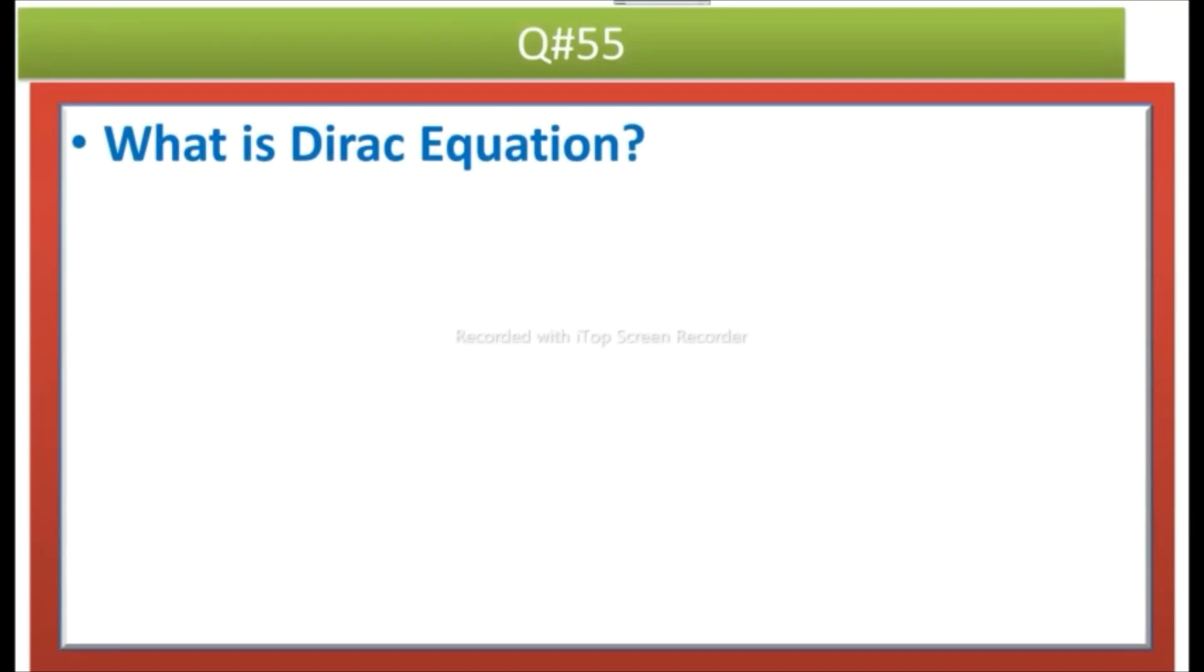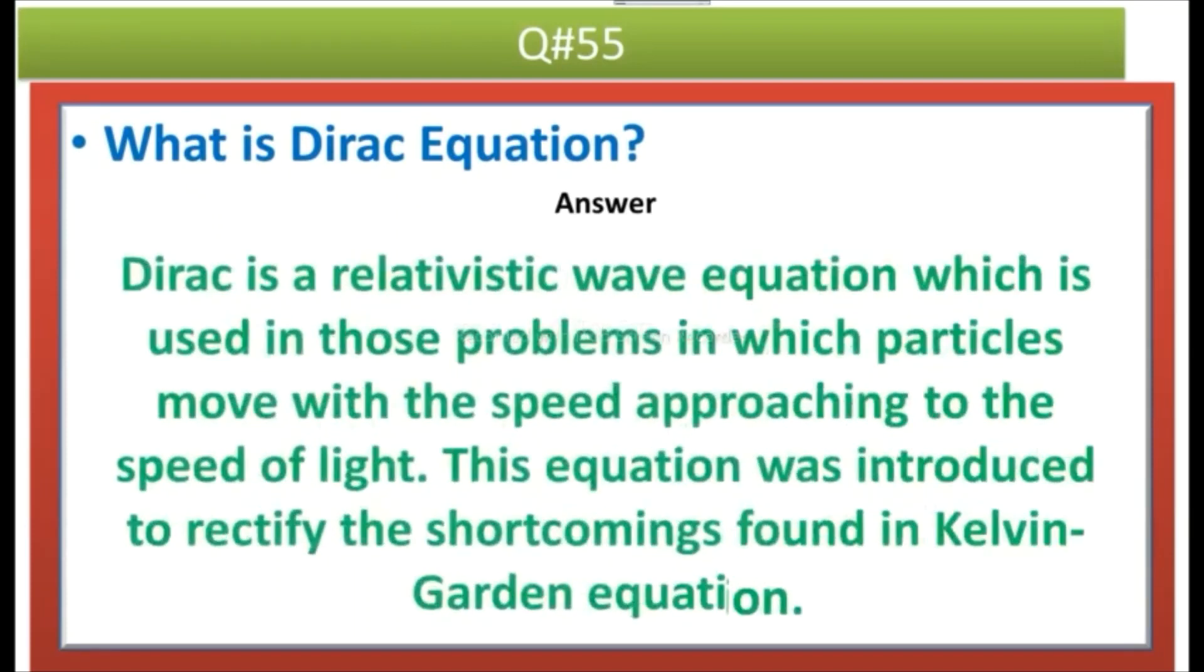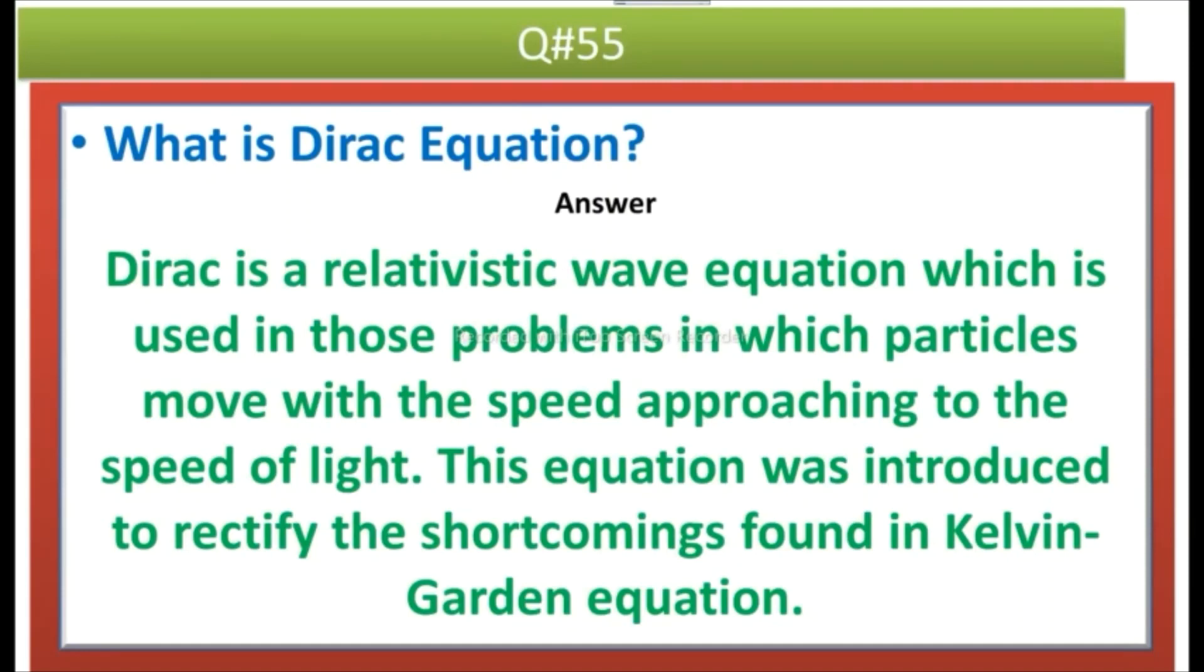The next question is what is Dirac equation? Answer: Dirac is a relativistic wave equation which is used in those problems in which particles move with the speed approaching to the speed of light. This equation was introduced to rectify the shortcomings found in Klein-Gordon equation.